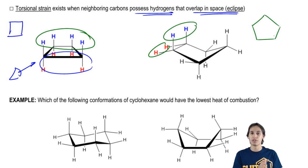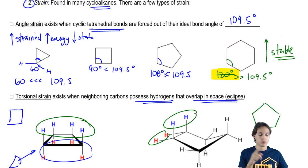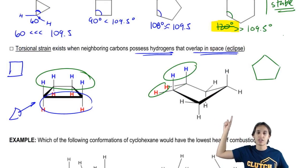Is the main cause of instability ring strain, which is right over there, or is it torsional strain, which is those hydrogens there?